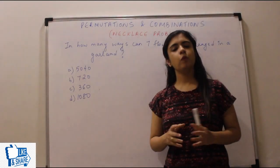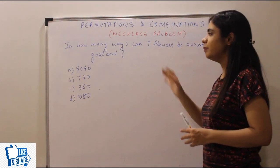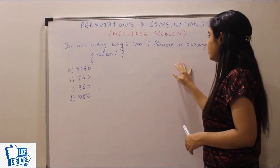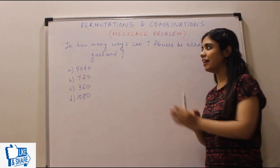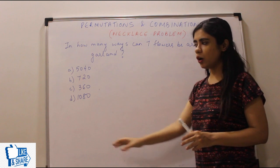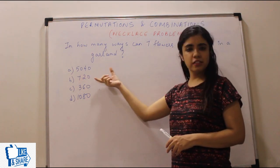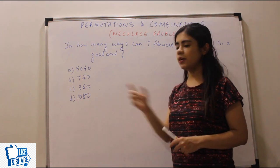Now let's look at the next problem. What does it say? In how many ways can seven flowers be arranged in a garland? Seven flowers to be arranged in a garland. They have given you the options 5040, 720, 360, 1080.